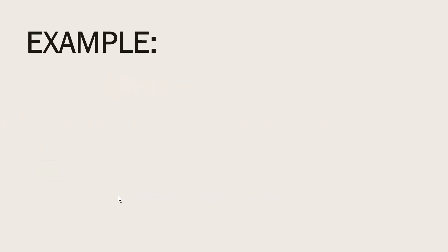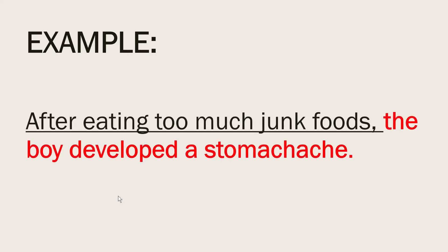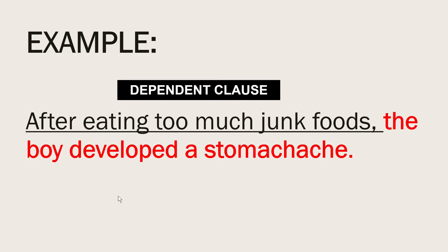The example 'The boy developed a stomach ache after eating too much junk food' can also be written this way: 'After eating too much junk food, the boy developed a stomach ache.' Notice that the two clauses can be written interchangeably. But if the dependent clause is placed at the beginning of the sentence, a comma shall be placed after the dependent clause.